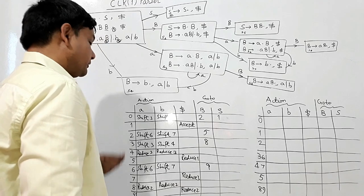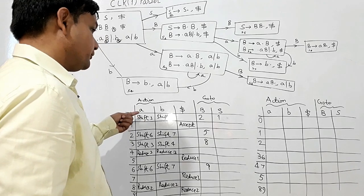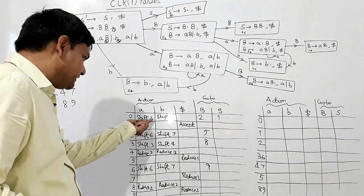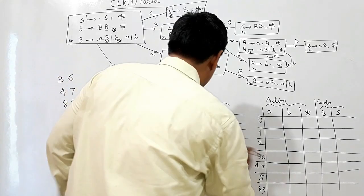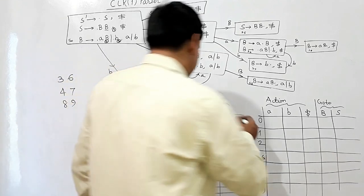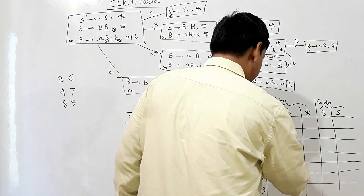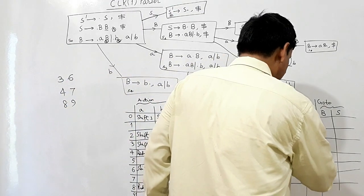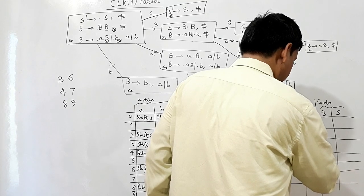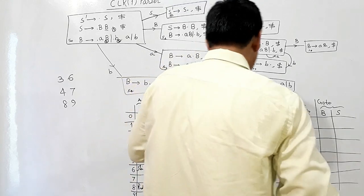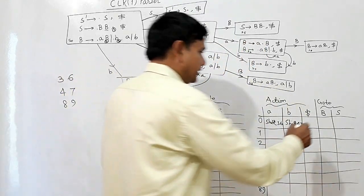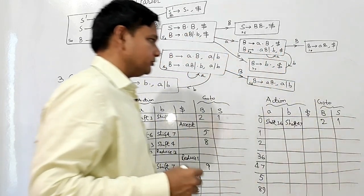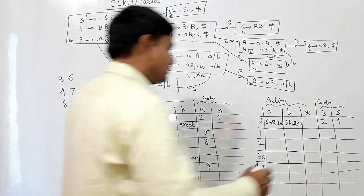Now in state 0, shift 3 means I am shifting in, and this 3 refers to the state number. Since 3 and 6 are merged, I will write shift 3,6. Under B, since 4 and 7 are merged, I will write shift 4,7. Under non-terminal B, the goto is state 2, which is not merged with any state. State 1 cannot be merged with any other state — in state 1 at dollar I write accept.